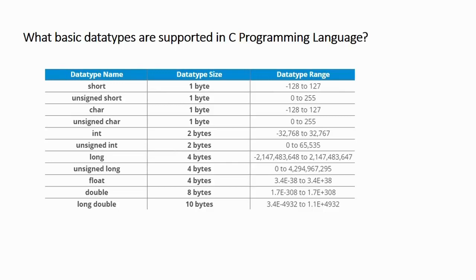Next, we have long. Long is nothing but an extension of integer — used to store larger integer values. The size of long is double that of integer, that is 4 bytes, and its range is from -2147483648 to +2147483647.